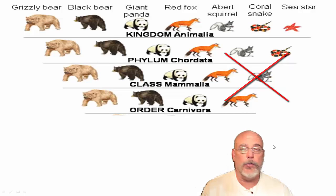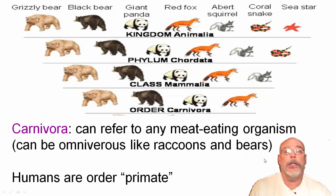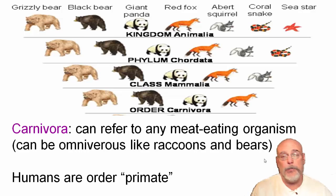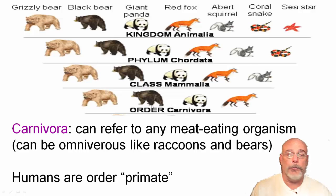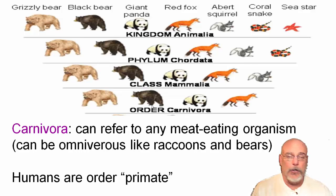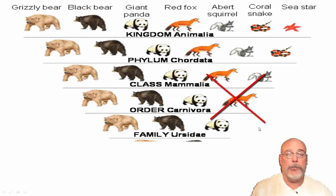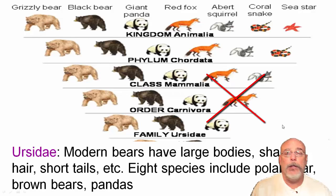The next group knocks out Mr. Squirrel — this is the order Carnivora. Carnivora refers to meat-eating organisms, though they can be omnivorous like raccoons and bears. Interestingly, this is where humans get knocked out too. Up until this point, humans are animals, chordates, and mammals, but here we branch off into the primates — which includes apes, chimpanzees, and bonobos. The order Carnivora in this example includes the brown bear, black bear, panda, and fox.